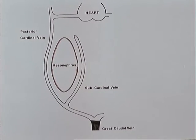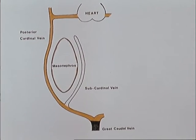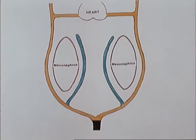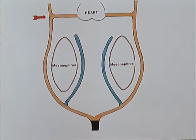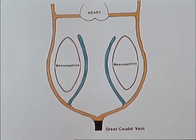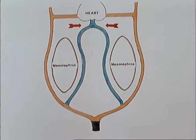On either side of the developing mesonephros are two major longitudinal veins: the posterior cardinal on its posterior lateral border, shown in orange, and the subcardinal on its anterior medial side, shown in blue. At first, only the posterior cardinal has any connection with the heart, but both veins are connected to each other and to the great caudal vein, which receives blood from that part of the fetus. Later, the subcardinal vein on the medial side of the mesonephros joins with its fellow and makes connection with the heart through what will eventually become the inferior vena cava.